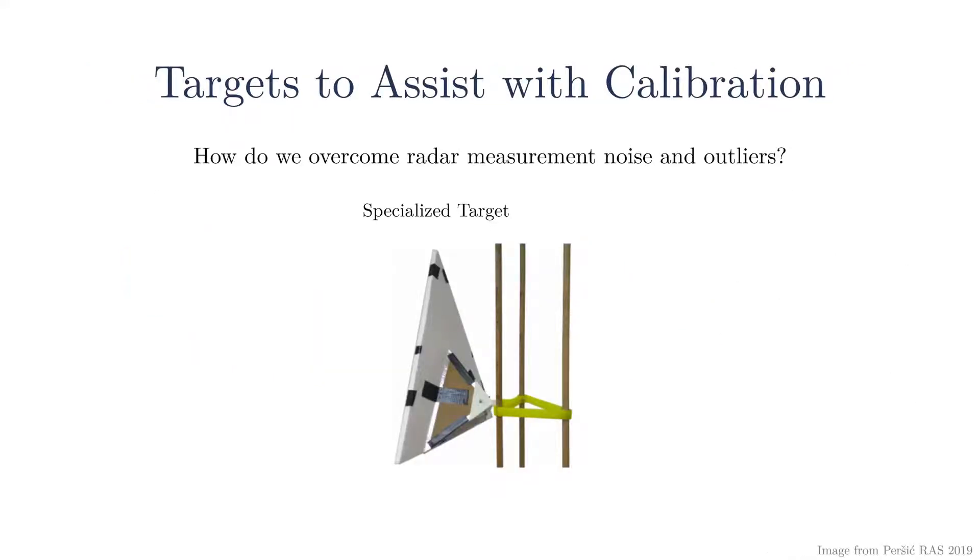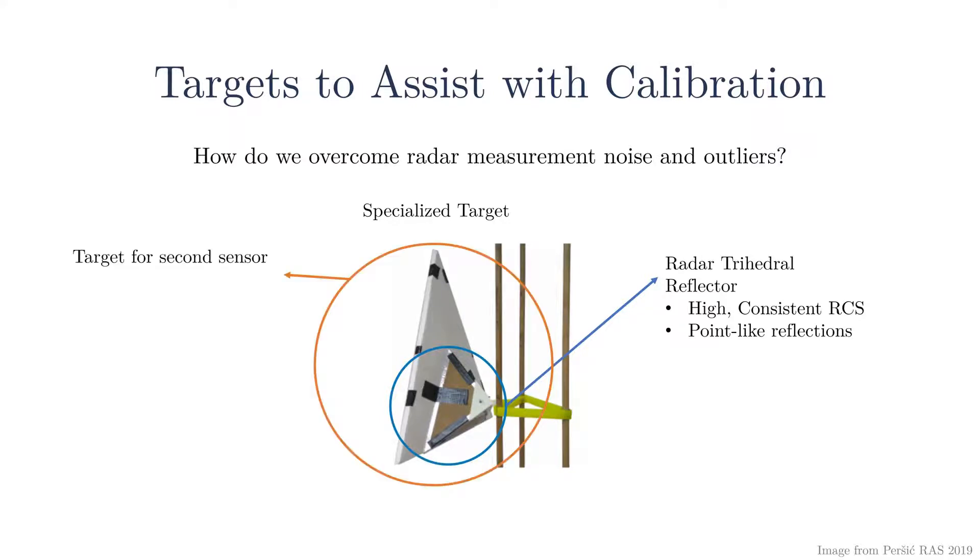To assist with the radar extrinsic calibration process, most algorithms rely on specialized targets that consist of two components. First, a radar trihedral reflector, which creates consistent, high-intensity, point-like radar measurements. Second, a target for the second sensor.